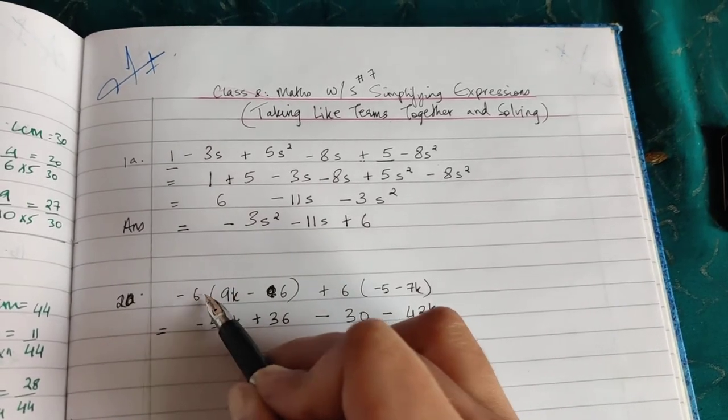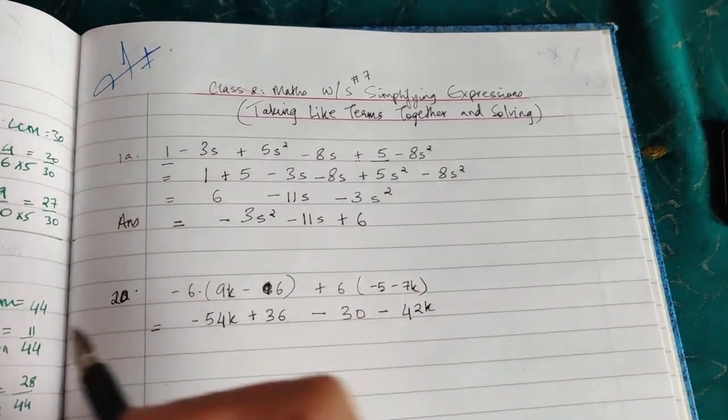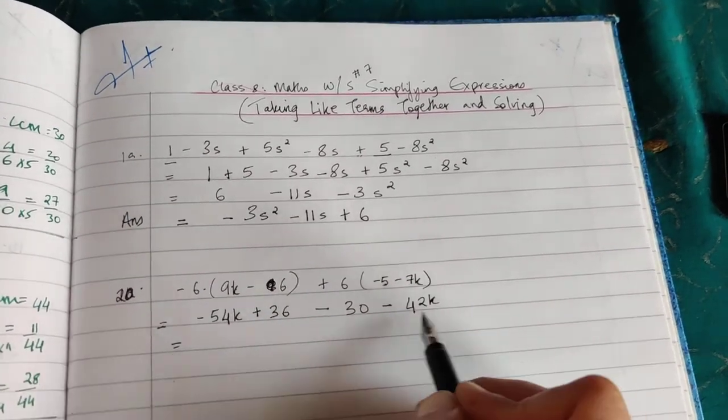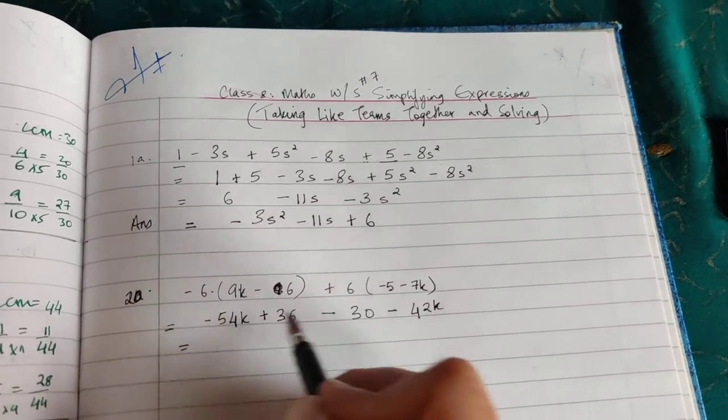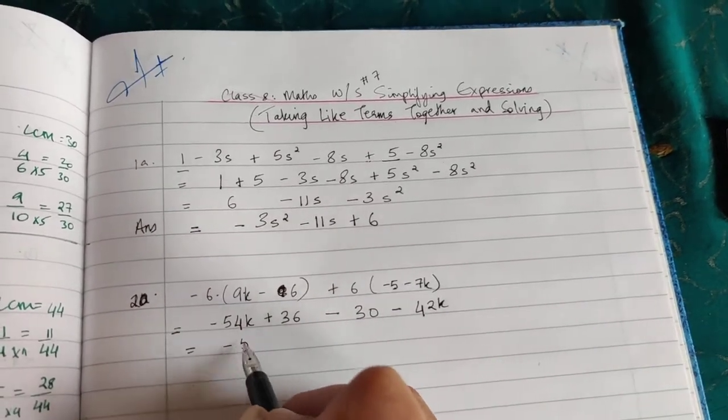And very carefully, now what happens? Now we have four terms. We need to put the like terms together. So like terms are... here is a k variable. Bring the first one together: -54k.